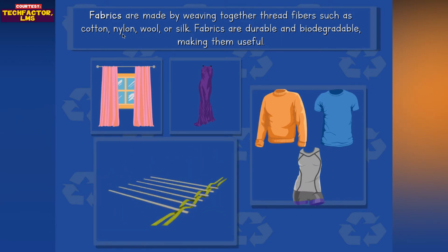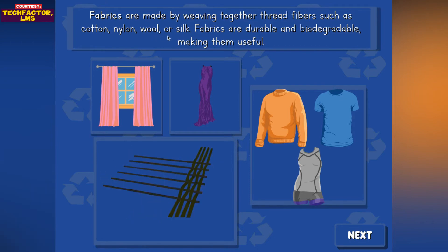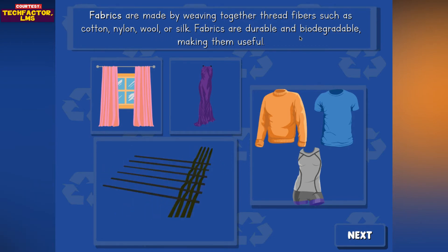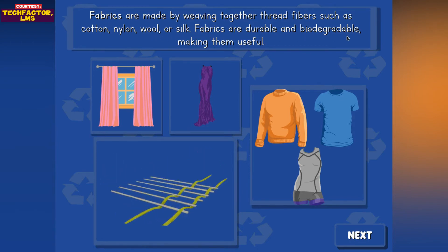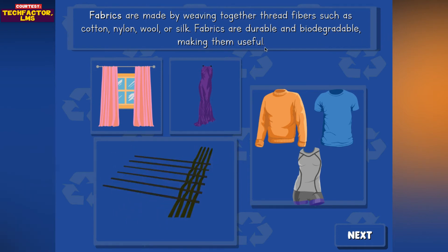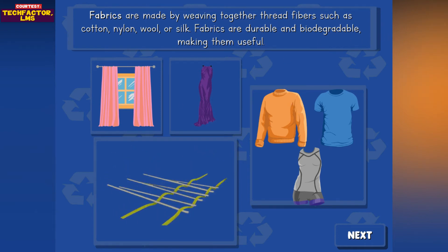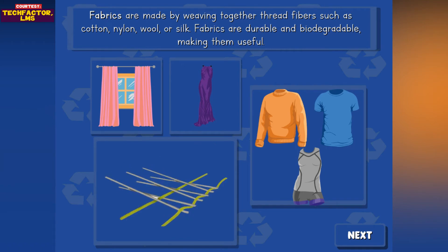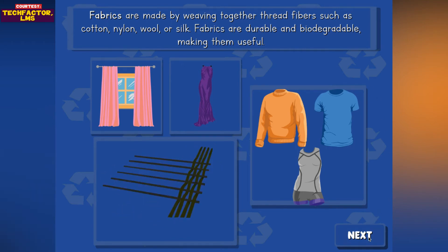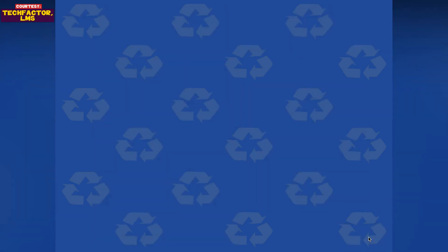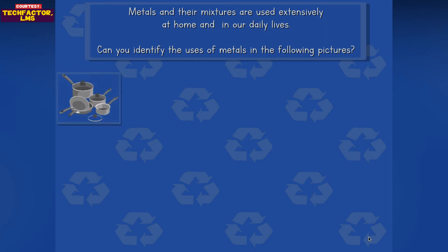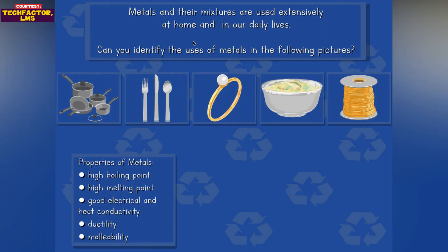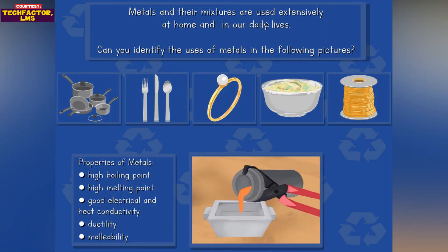Fabrics are made by weaving together thread fibers such as cotton, nylon, wool, or silk. Fabrics are durable and biodegradable, making them very useful.